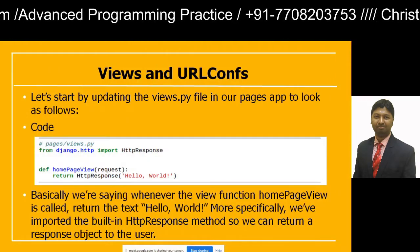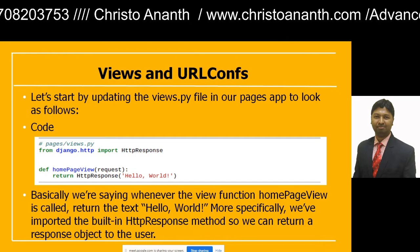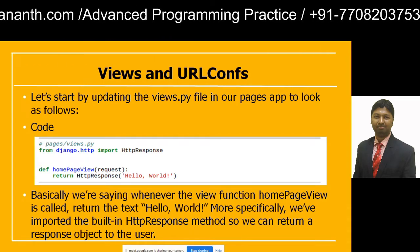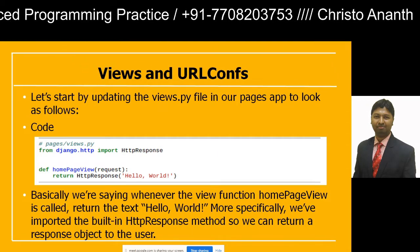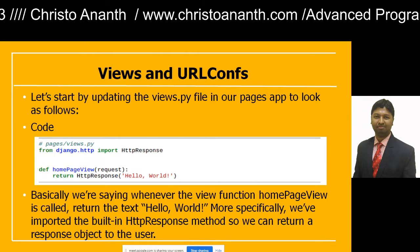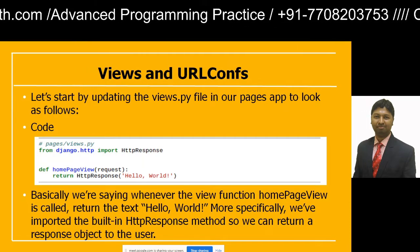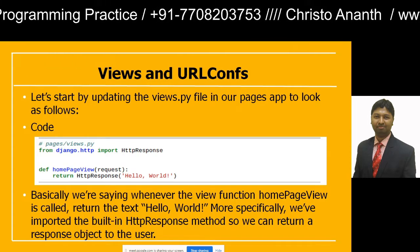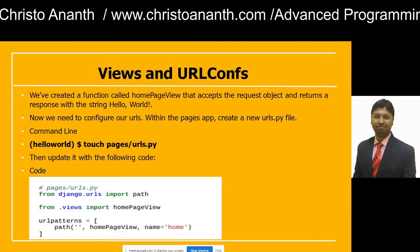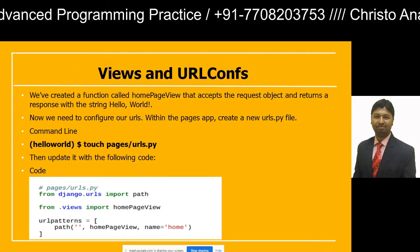Now update the views.py file in the pages app. In pages/views.py, write: from django.http import HttpResponse. Then define a function homepageview that accepts a request and returns HttpResponse('Hello World'). We have imported the built-in HttpResponse method so it returns a response object to the user. This means whenever the homepageview function is accessed, it automatically returns the content 'Hello World'.